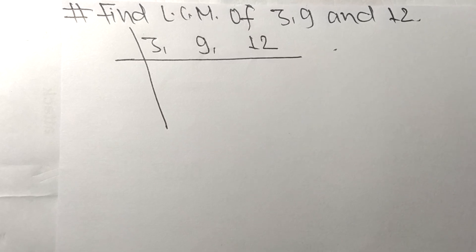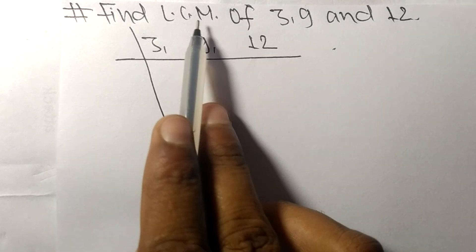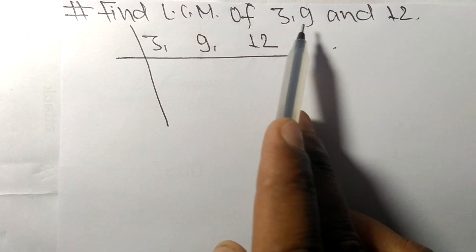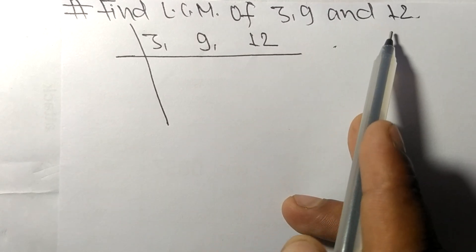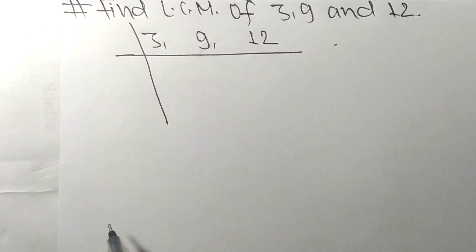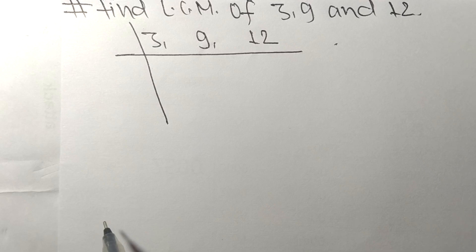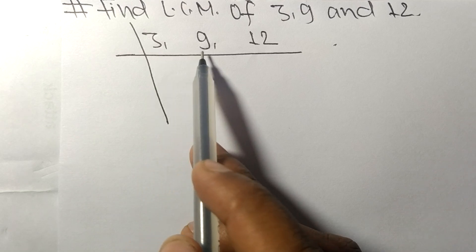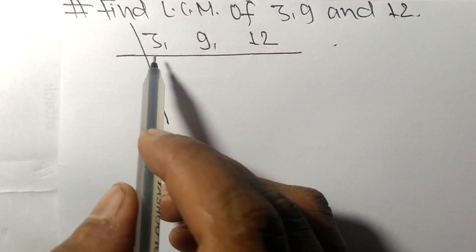So today in this video we shall learn to find the LCM of 3, 9, and 12. To find LCM we have to choose the lowest number that can exactly divide at least any two of these numbers.